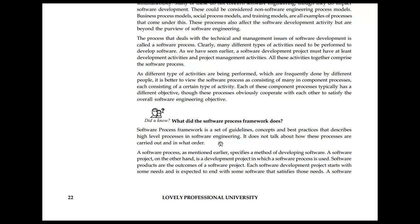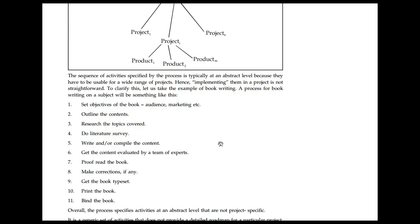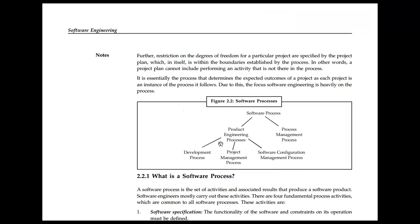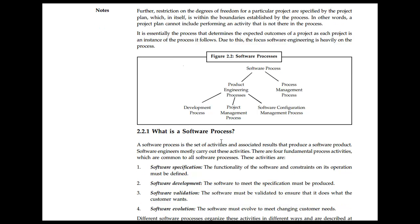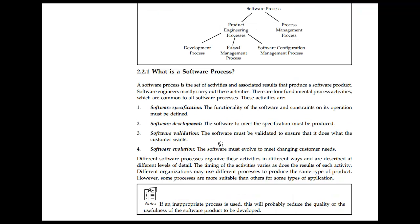A software process is a set of obligations and concepts describing the high-level purpose of software engineering, without specifying exactly how processes are carried out. There is a relationship between software processes, projects, and products. For example, the process for writing a subject would include outlining the content, researching topics, and conducting a literature review. The project plan places further restrictions on the degree of freedom for a particular process.